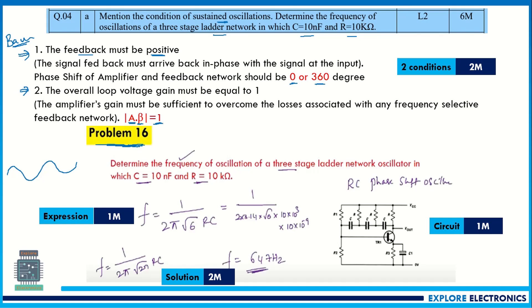In my problems video I have already explained the same problem with the same values as in the model paper. For a three-stage RC ladder network oscillator, the formula is f = 1 / (2π√6 × RC). Replacing R = 10 kΩ and C = 10 nF, you get 647 Hz as the frequency. If R1, R2, R3 and C1, C2, C3 are given separately, use the corresponding formula; here since R and C values are the same, this formula applies directly.